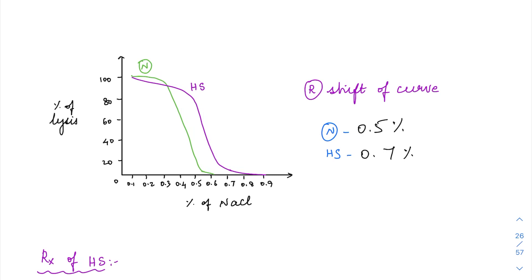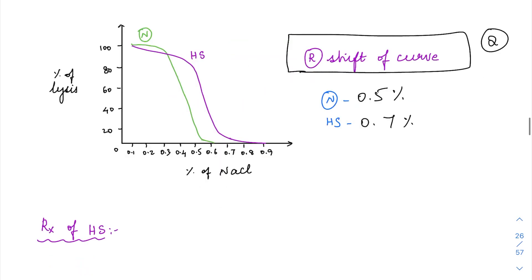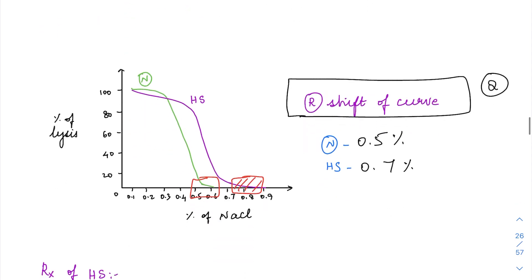If you plot osmotic fragility against the percentage of hypotonic saline, you get a curve. The hereditary spherocytosis graph has a shift of the curve to the right side — a right shift of the curve. The green curve is normal, where hemolysis starts at 0.5%, while in hereditary spherocytosis it starts at 0.7–0.8% itself — this is why there is increased osmotic fragility in hereditary spherocytosis.